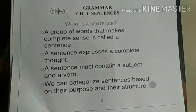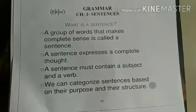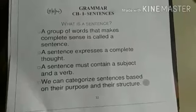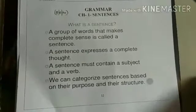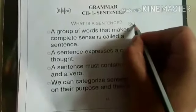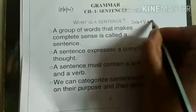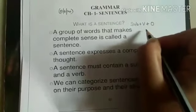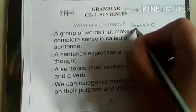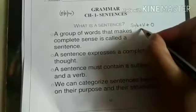A sentence must contain a subject and a verb — subject और verb का होना जरूरी है. As you all know, a sentence is formed by: subject plus verb plus object. So a sentence must contain a subject and a verb.